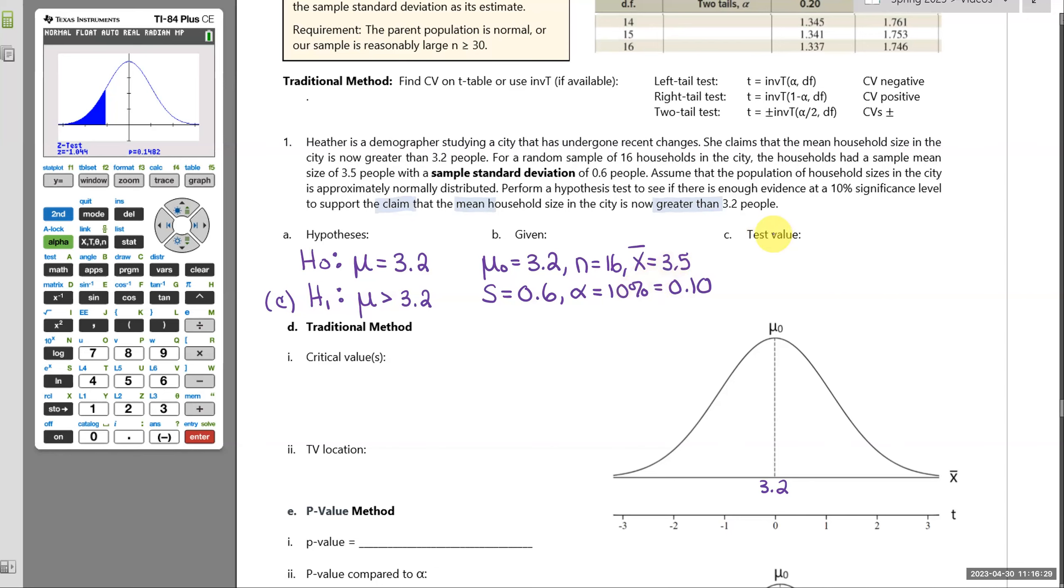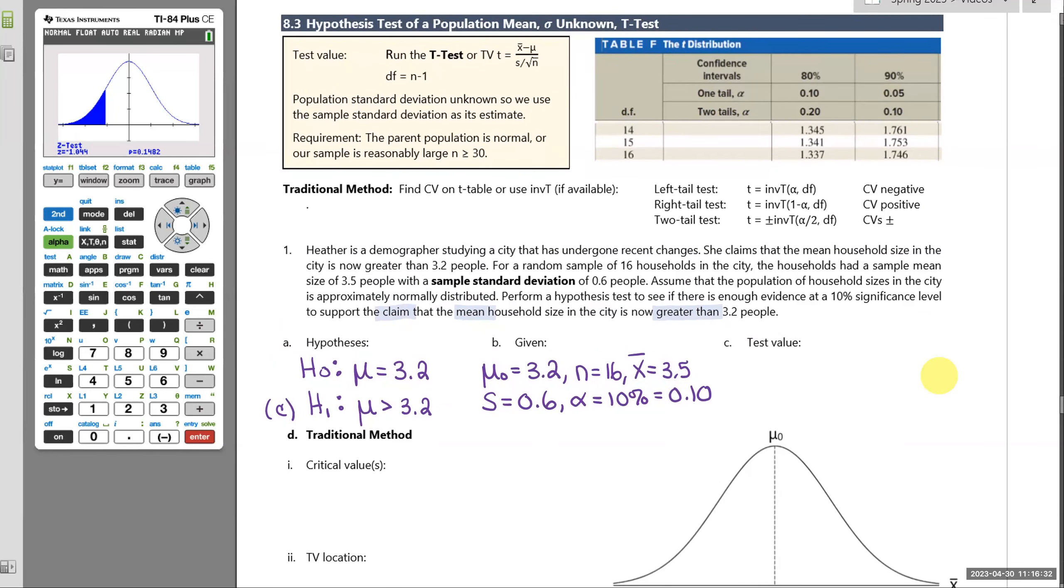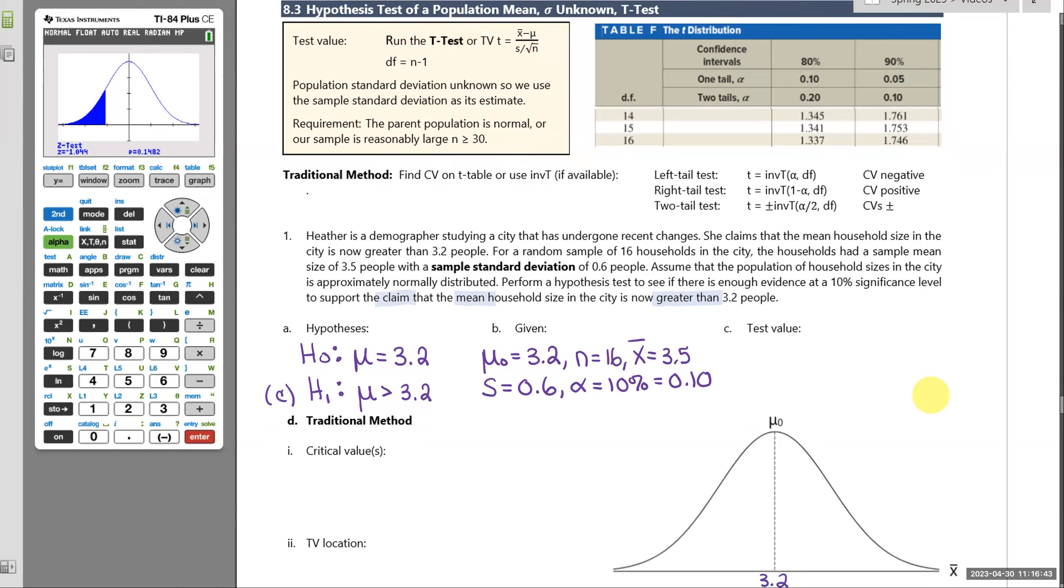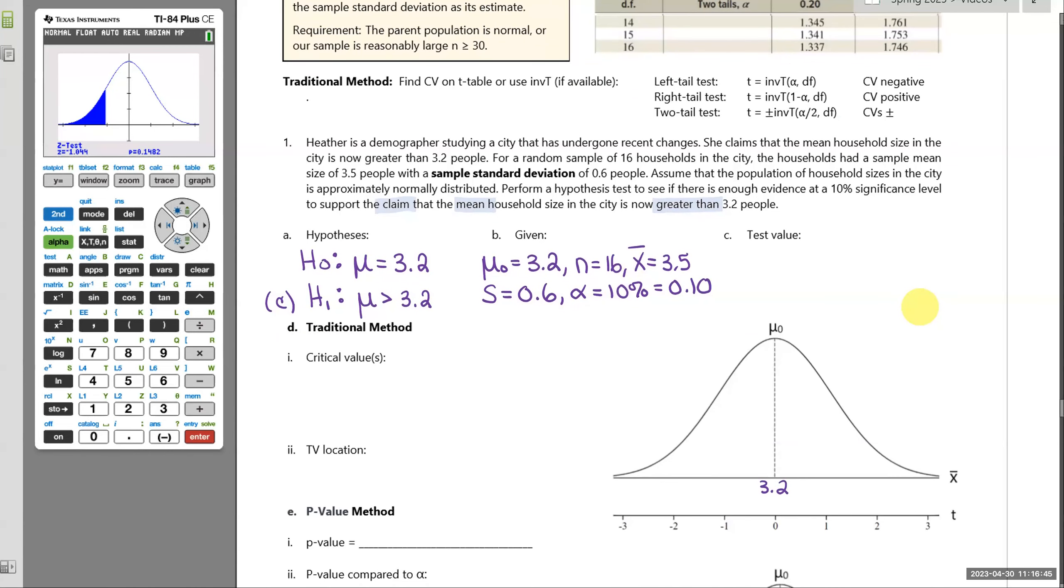So to find our test value, we can do that by hand by substituting. We had done that once when we did our z-score test values. Or you can just run a t-test and that will find it for you as well. So we can run the t-test. And the reason we're doing a t-test is because sigma is unknown. Population standard deviation unknown.